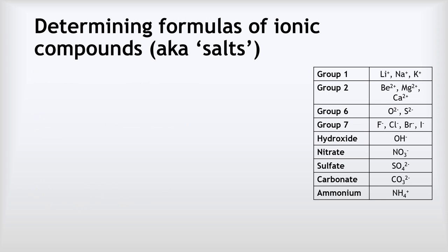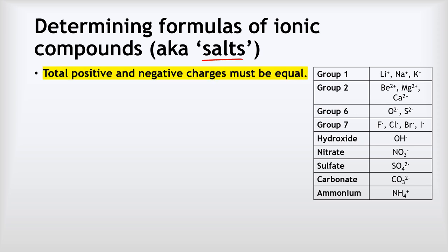The first thing we need to do is remind ourselves how to determine the formula of ionic compounds, which we often just call salts. Our golden rule — which is why it's in yellow — is that the total positive and negative charges must be equal. So if we've got three positive charges, we also need to make sure we have three negative charges, and so on.